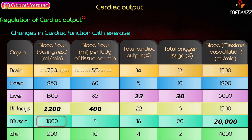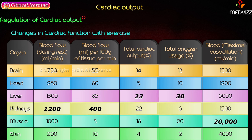Blood flow to muscle during rest is 1000 ml per minute, which is 3 ml per 100 grams of tissue per minute — the lowest among all tissues. Total cardiac output to muscle is 18 percent, and total oxygen usage is 20 percent. With maximum vasodilation, muscle can receive up to 20,000 ml per minute.